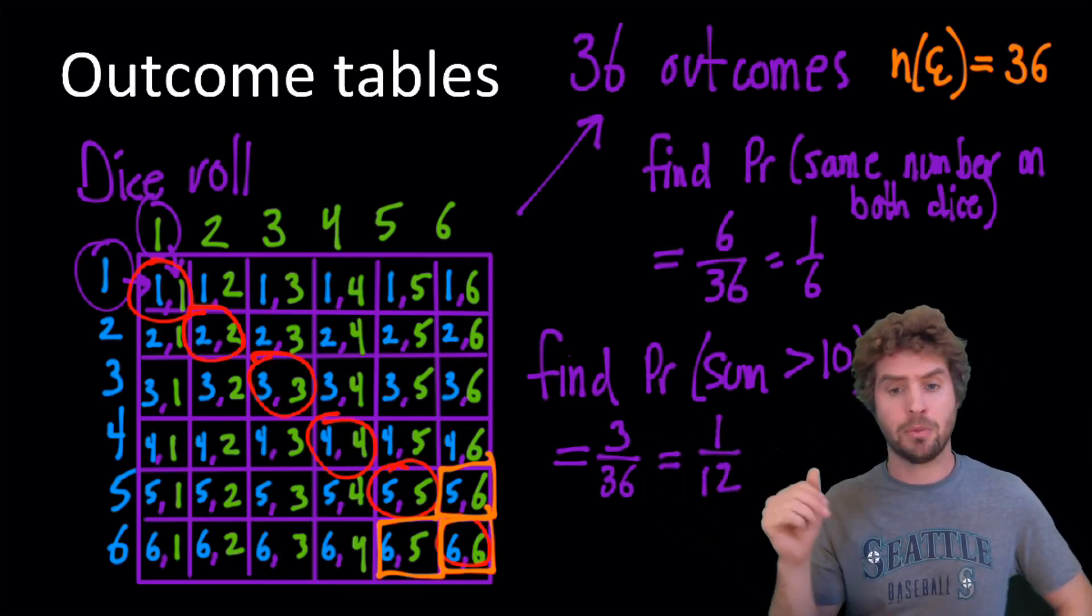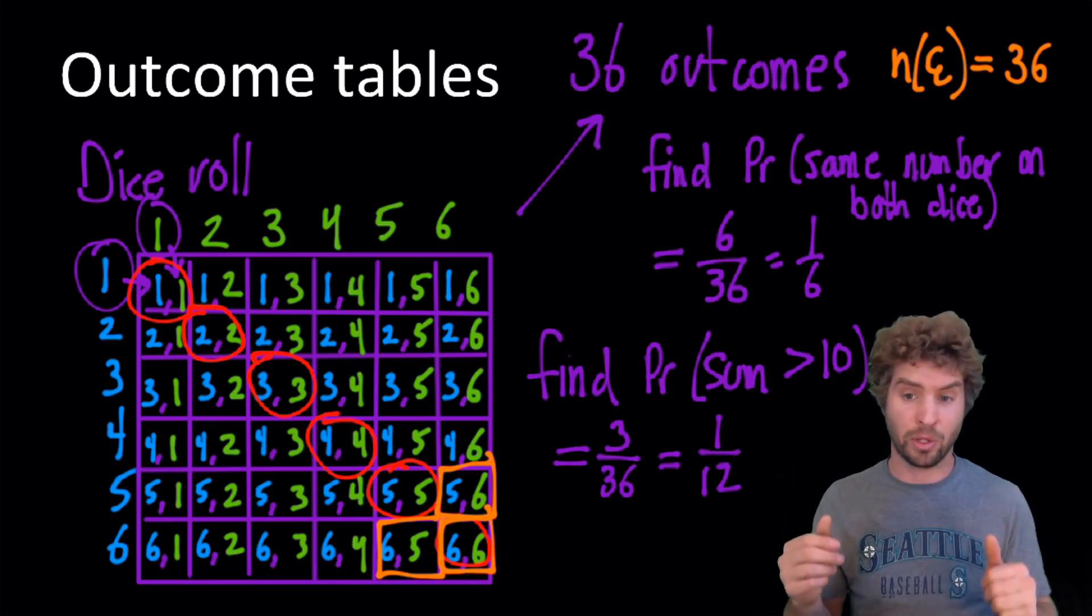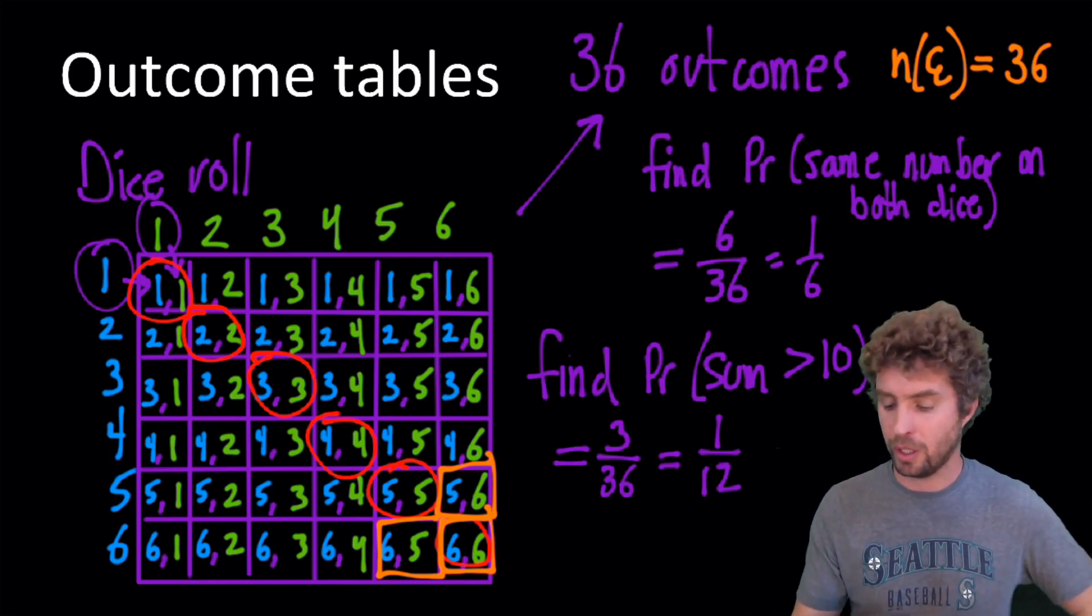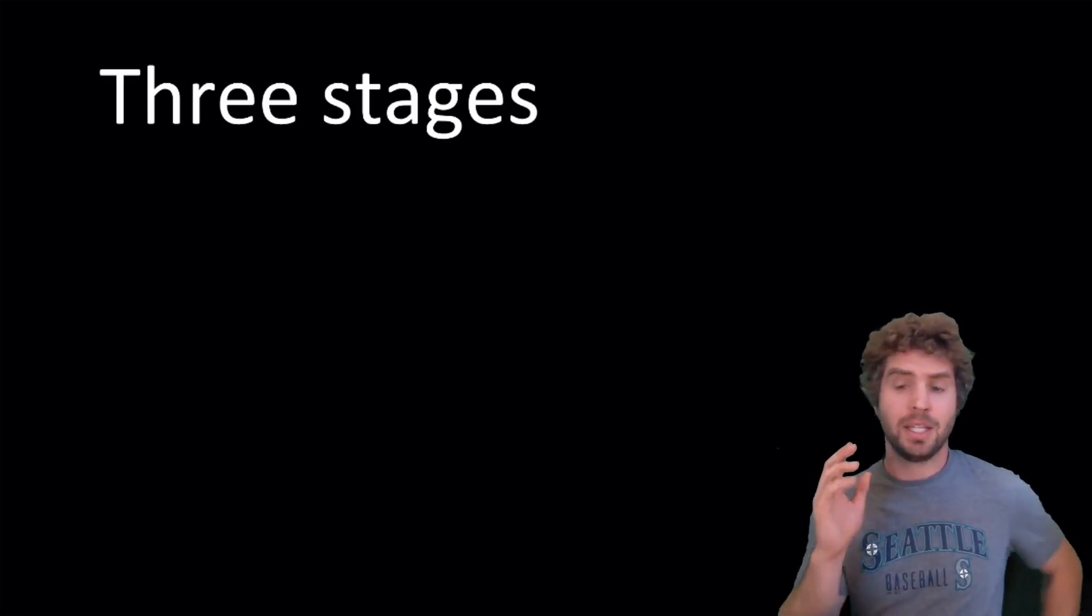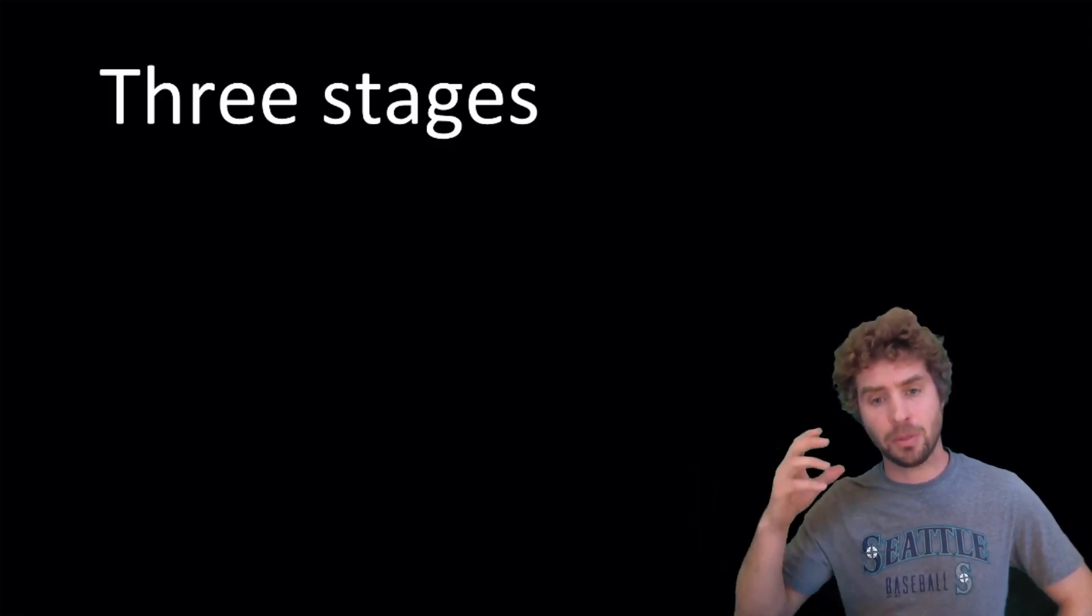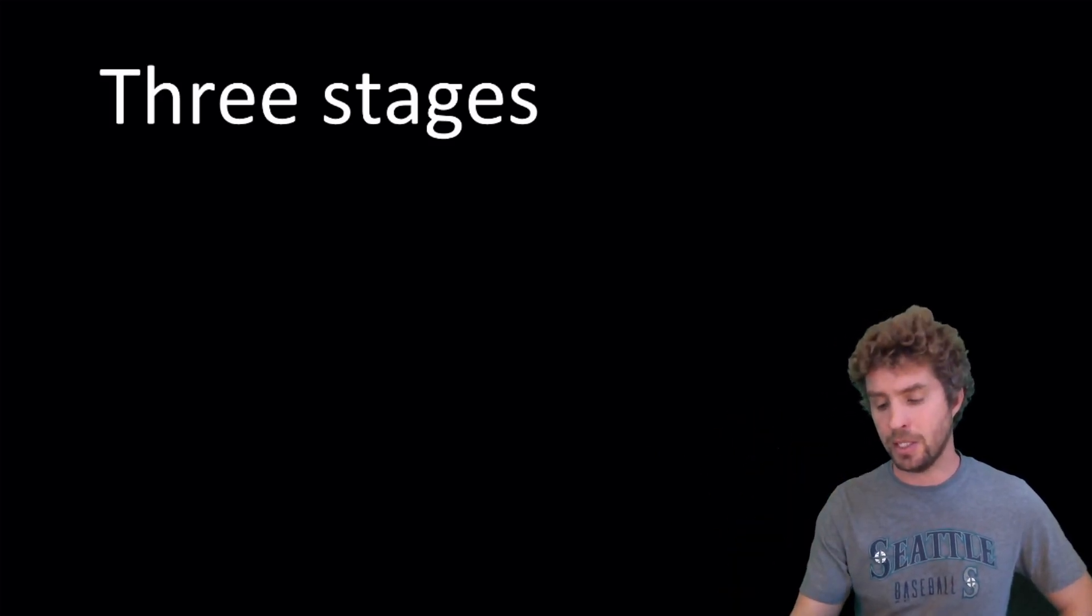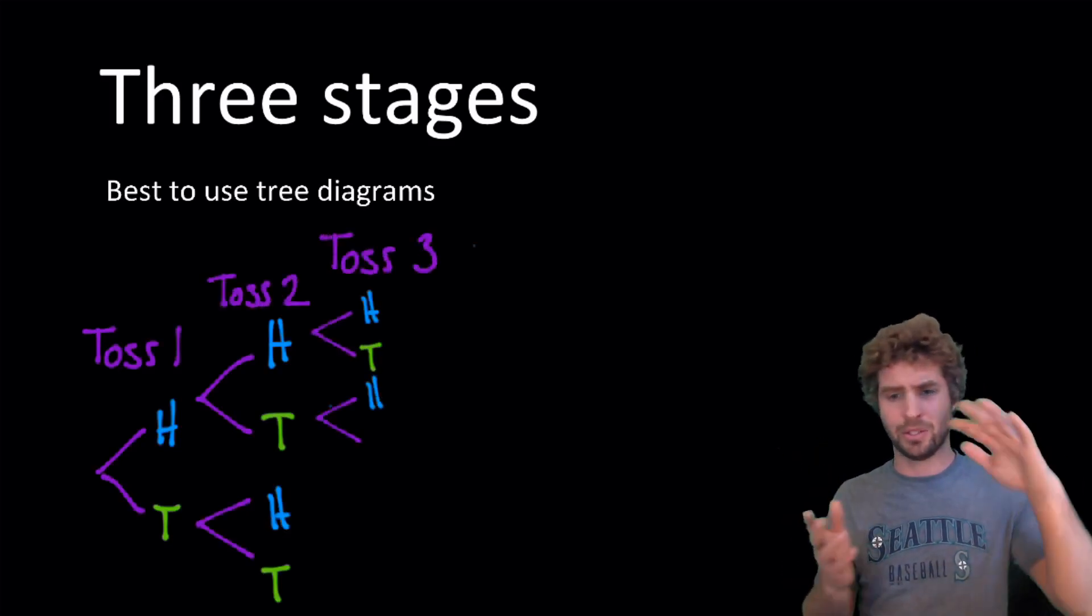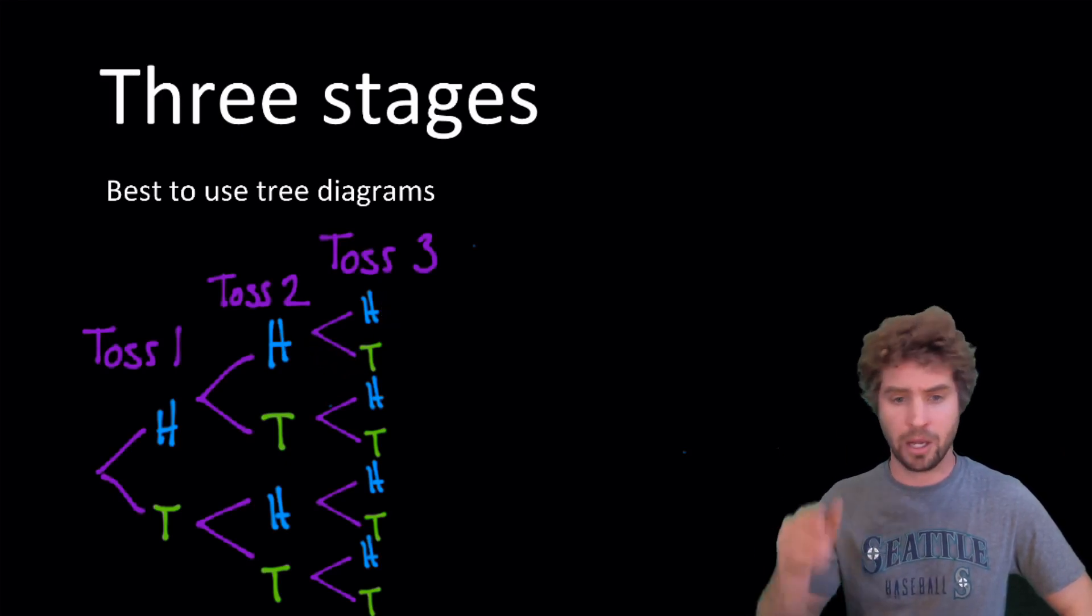So outcome tables rather than a tree diagram can be good, particularly when there's a lot of options for each trial. This rolling a dice, you could get six different numbers rather than the heads or tails, the two options for flipping a coin. Now, even though the table was better for rolling a dice, if you're going to do something, if there's going to be three stages, so you're going to flip a coin three times or roll the dice three times, the best visual diagram for this is going to be a tree diagram. Because a table can get, there's not sort of, you'd have to have almost three dimensions for your table. But whereas a tree diagram can come out pretty simply, we just have our first, our second, and our third toss. And each of the outcomes.